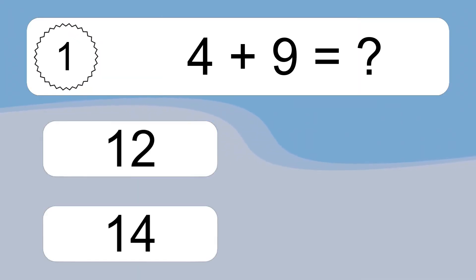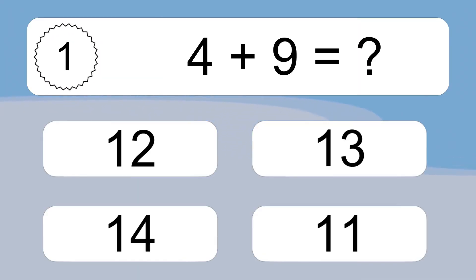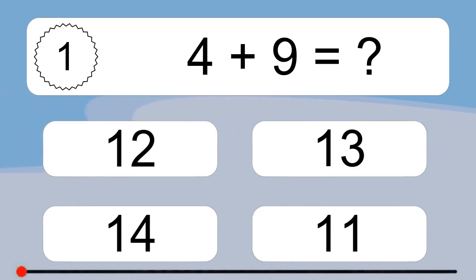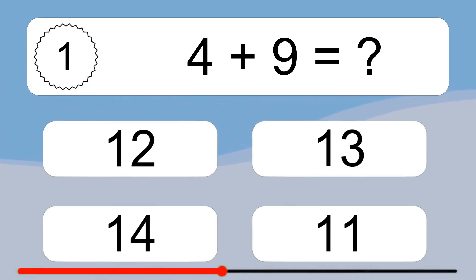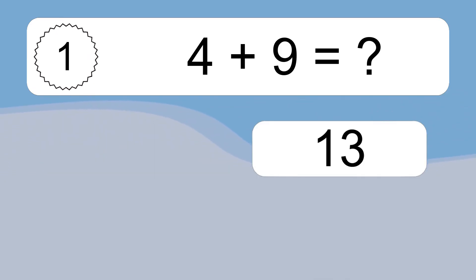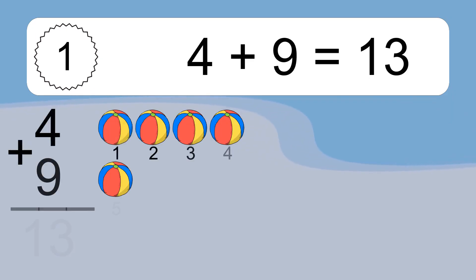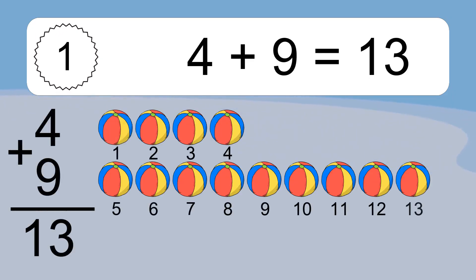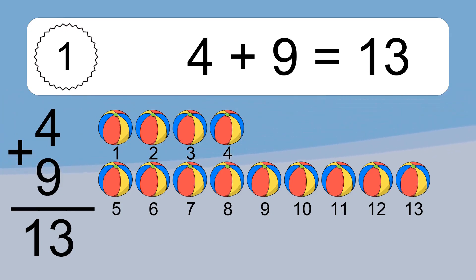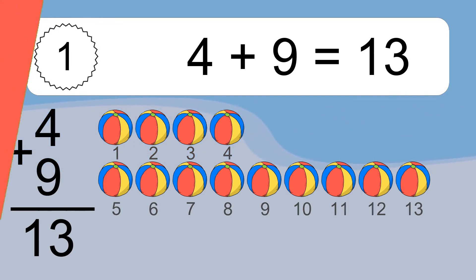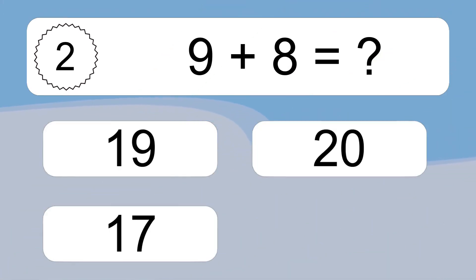4 plus 9 equals what? 1, 2, 3, 4, 5, 6, 7, 8, 9, 10, 11, 12, 13.